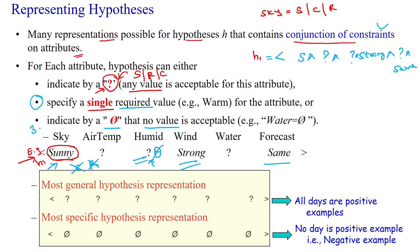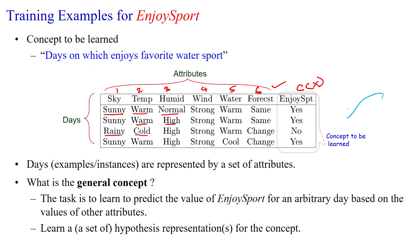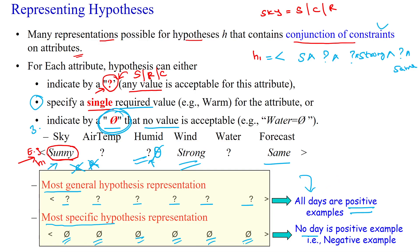This is the way to represent the hypothesis for a learning system. If it is the most general hypothesis, then all the attributes are represented with '?' symbol, meaning it will accept any value for the training example — so mostly it will have positive examples. The most specific hypothesis has all attributes represented with null, meaning no value is accepted at all. That means no day is a positive example — we cannot play the water game on that day. So null value features in the attributes represent negative examples.